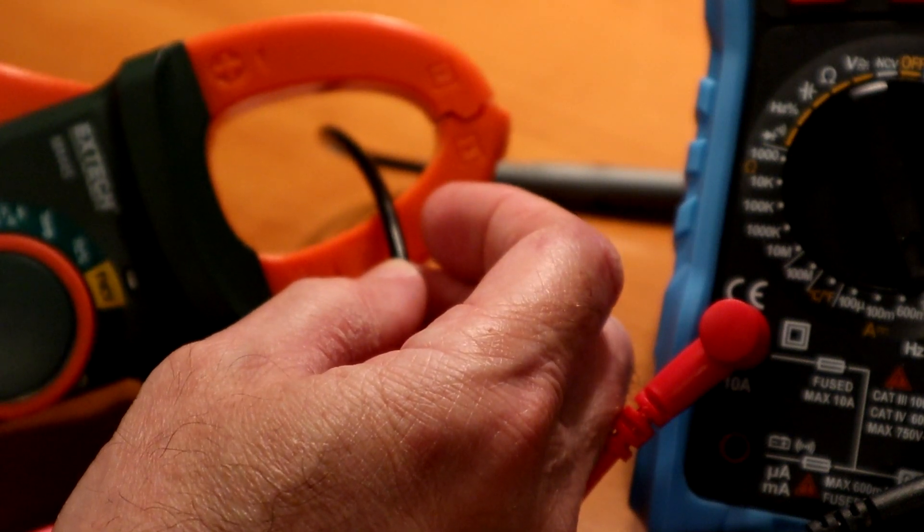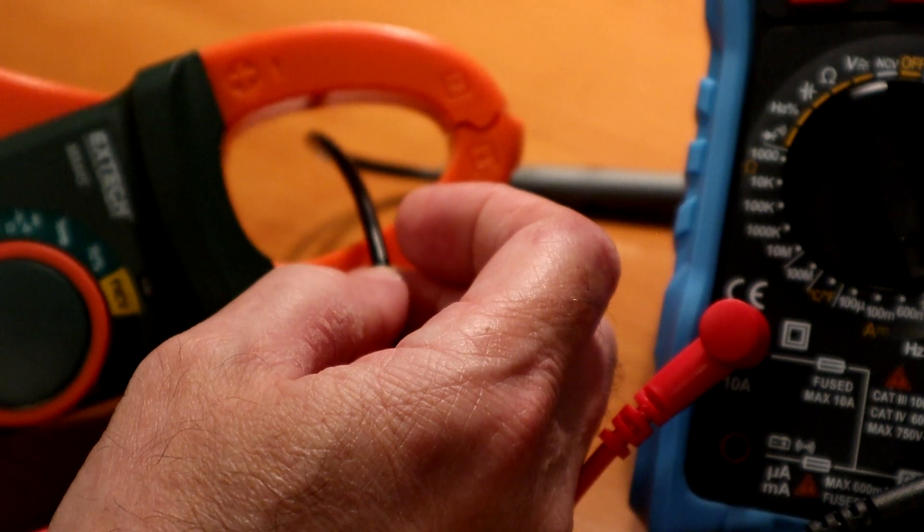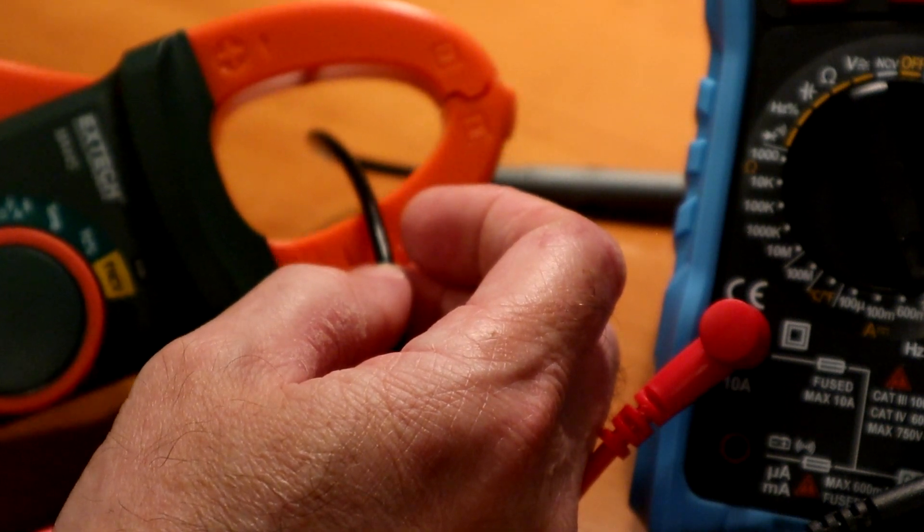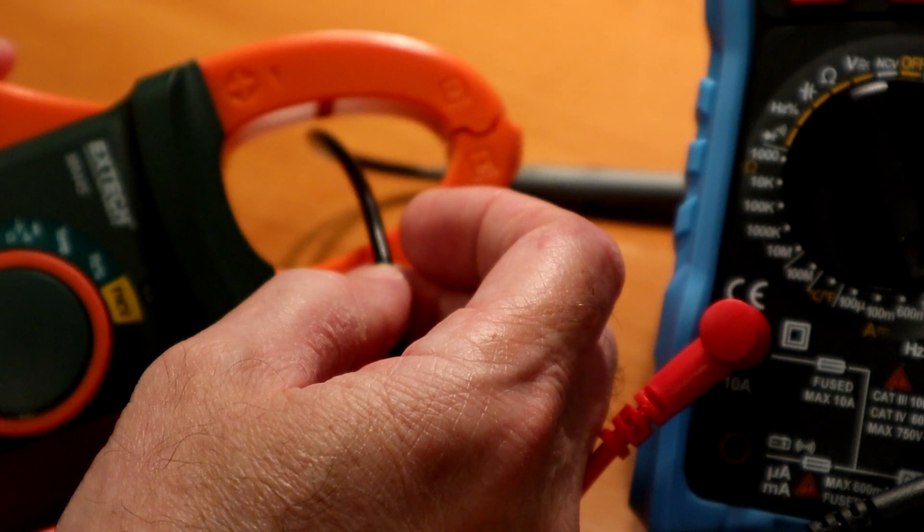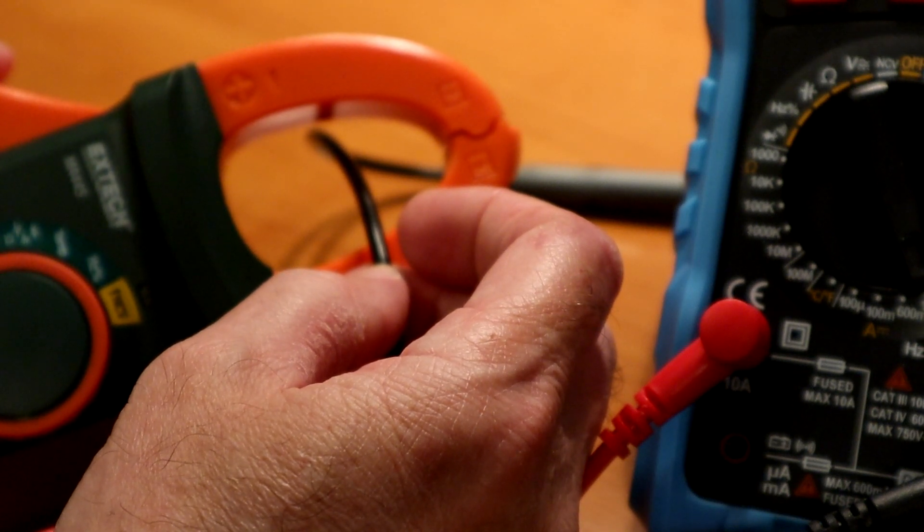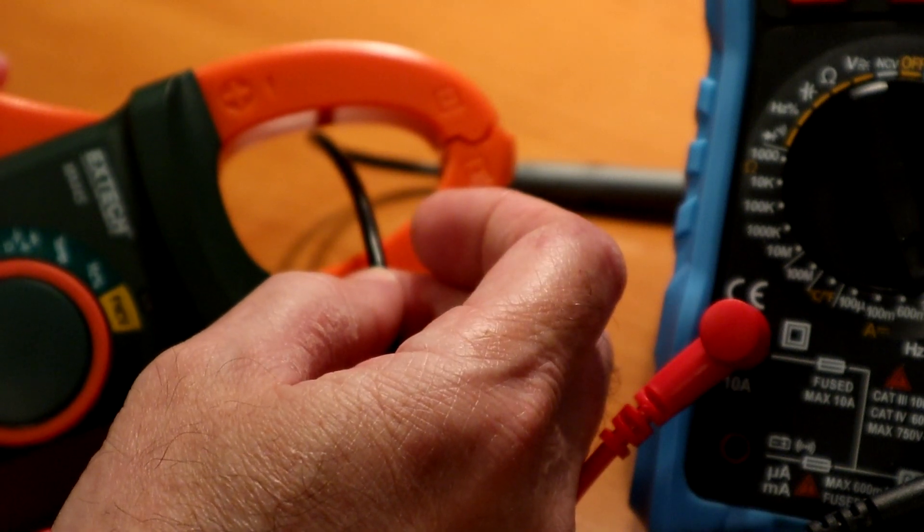with current flowing through it and you can open up the jaws and clip it there. And the magnetic field is created around this wire then is sensed by this clamp and then it reads it out accurately without any burden voltage at all. No drop in the voltage that's applied to the load and no chance of blowing a fuse. And frankly, this is the only way to do something on a car.